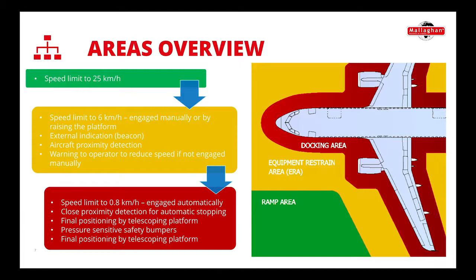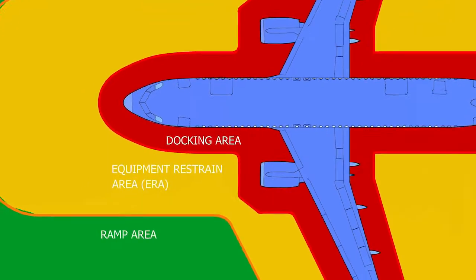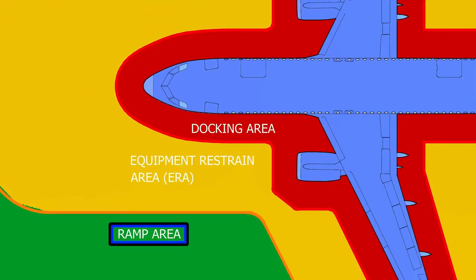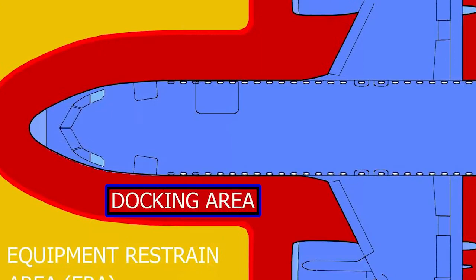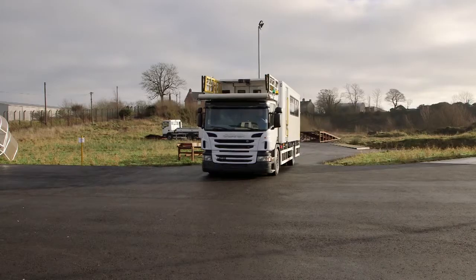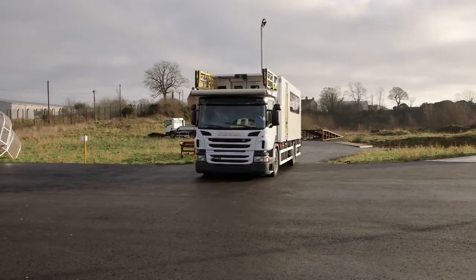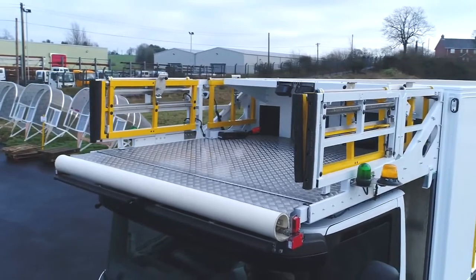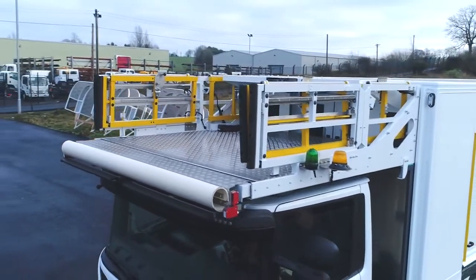There are three main zones in relationship to an aircraft covered by the standard: Ramp Area, Equipment Restrain Area, and Docking Area. The maximum speed limit in the ramp area is mandated by the airport and is usually around 25 km per hour.